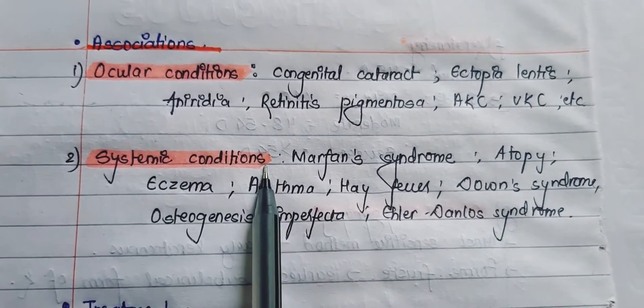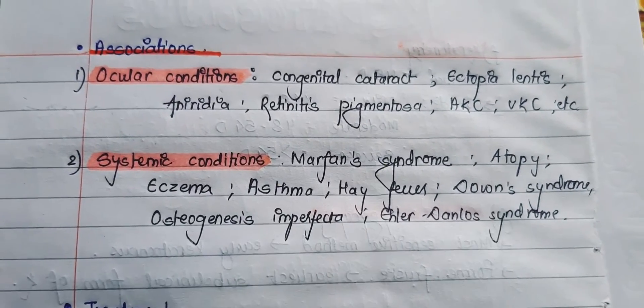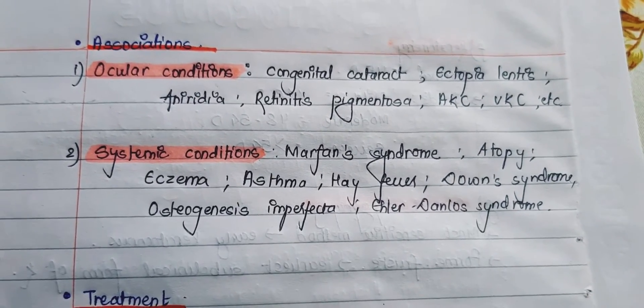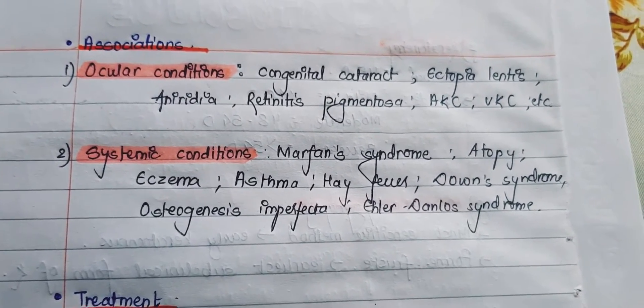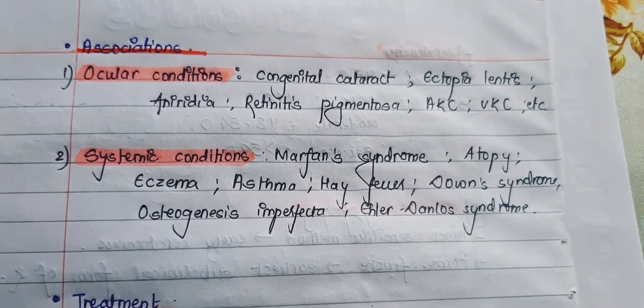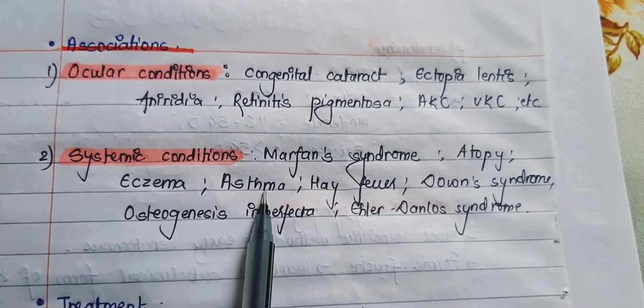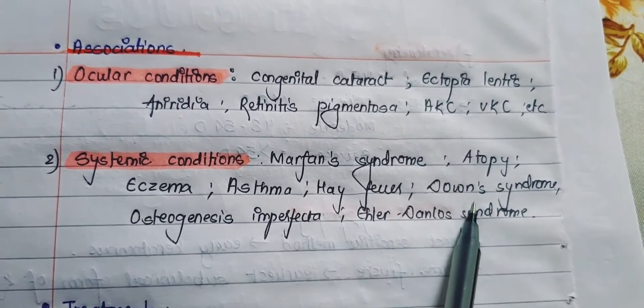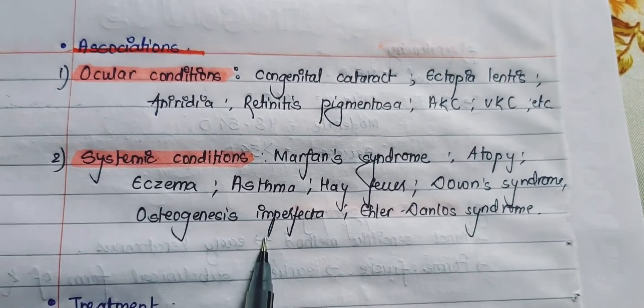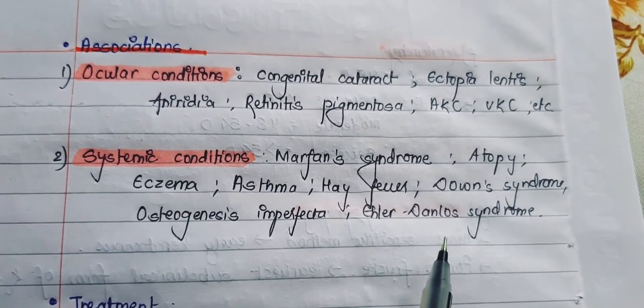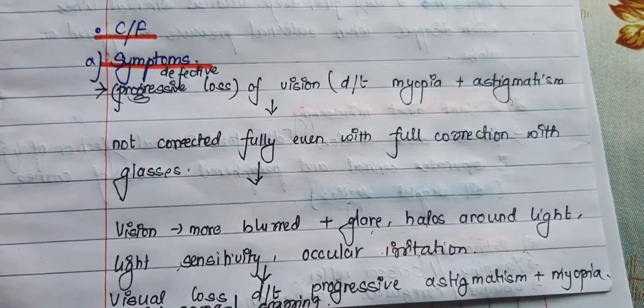The systemic conditions associated with keratoconus include Marfan syndrome, atopy, eczema, asthma, hay fever, Down syndrome, osteogenesis imperfecta, and Ehlers-Danlos syndrome.